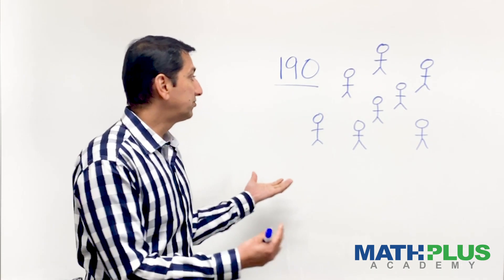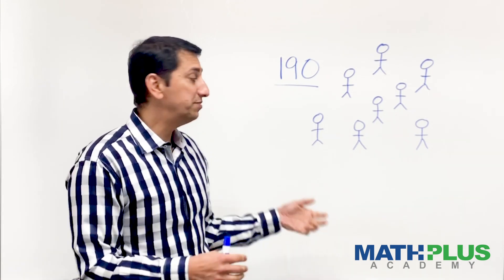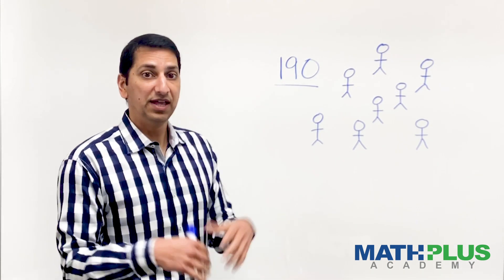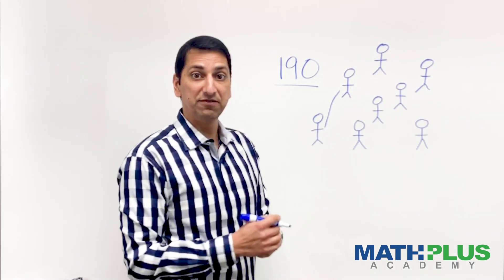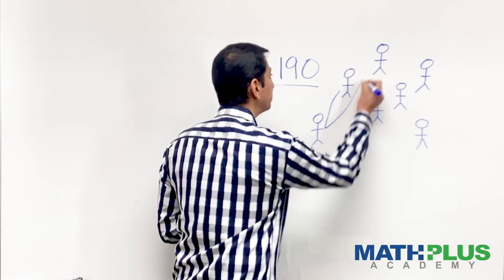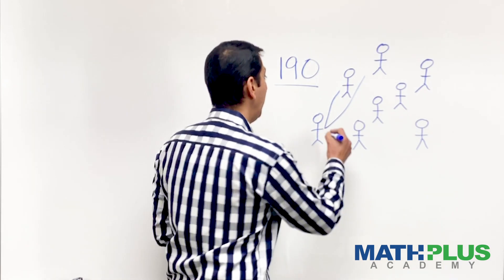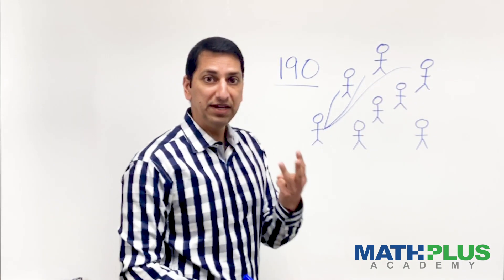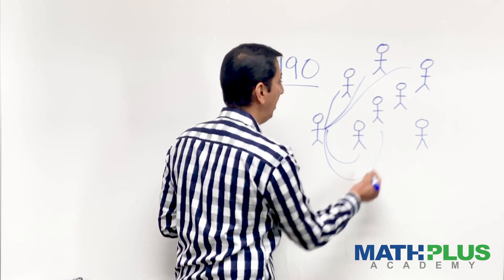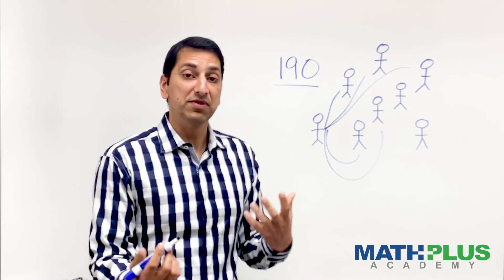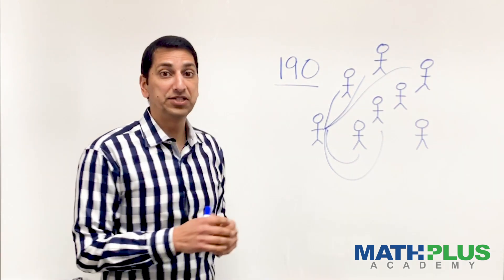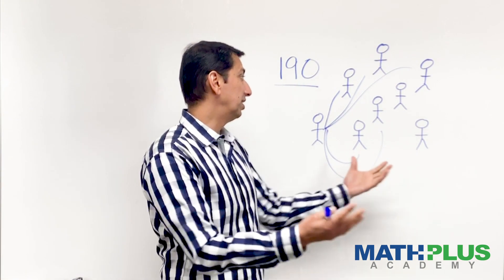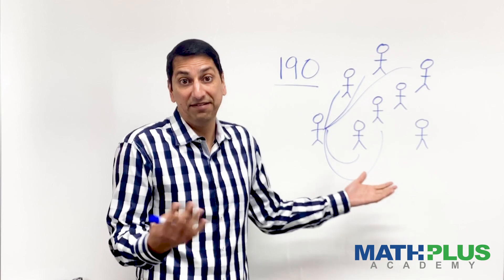So if you wanted to sort of act it out or draw it out, you might draw something that looks like this. And you might say, well, this person right here, I know they're going to shake hands with that person over there. That's one. And this person over here, that's two. And this person over there, that's three. And this one, four. And this one, five. And so on. You could start drawing out these connections to try and count how many handshakes will be for a certain number of people. Here I have eight. I don't know if that's going to get me the right number or not. So that's the puzzle.